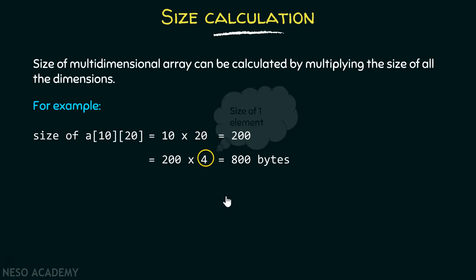Now suppose I want to calculate the size of this particular array. Then I have to multiply all these three sizes, and it gives me the total number of elements. Here size means the number of elements. And I want to determine the size in bytes, then I have to multiply 800 by 4, which gives me 3200 bytes.